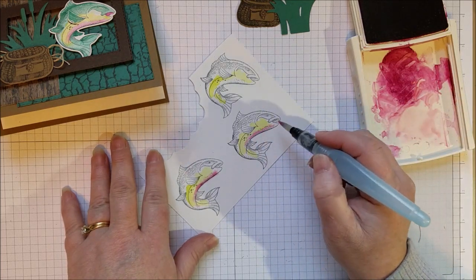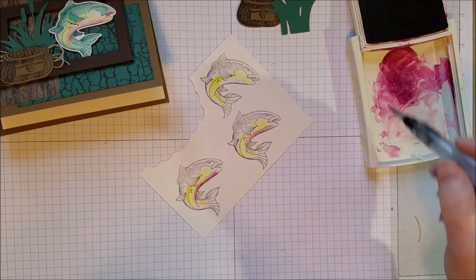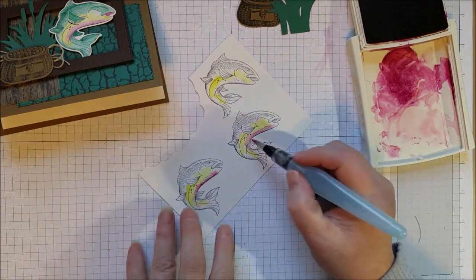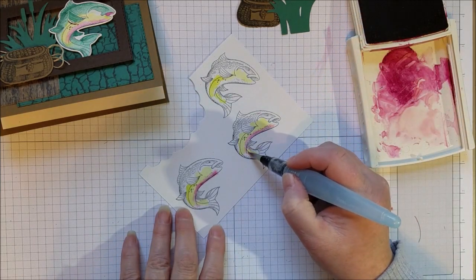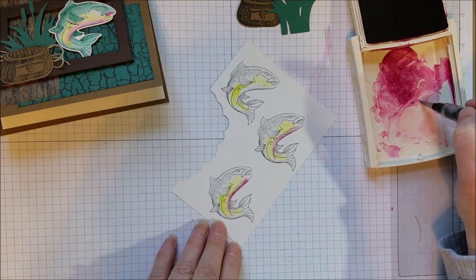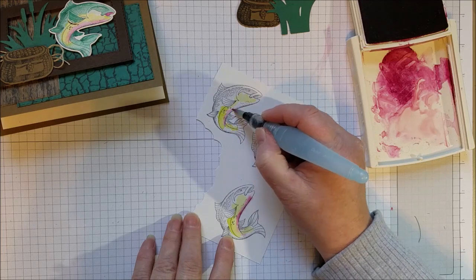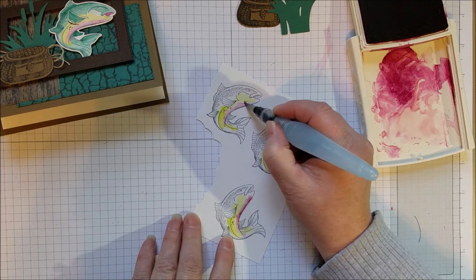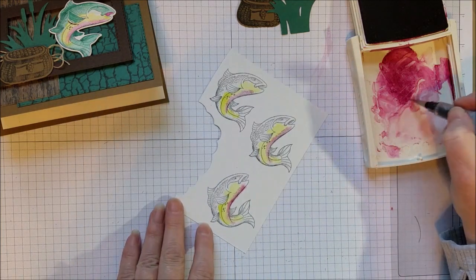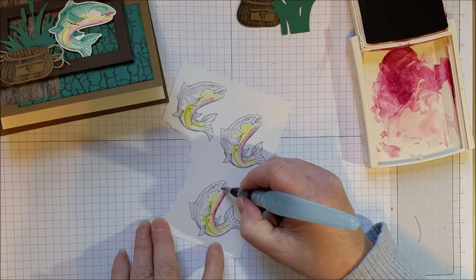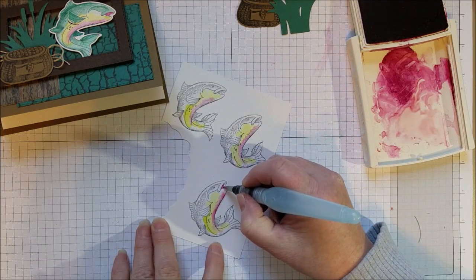Sometimes your brush might get a little too wet, so you can just kind of swipe it on your paper or go back over it on your stamp and scrub however you like.